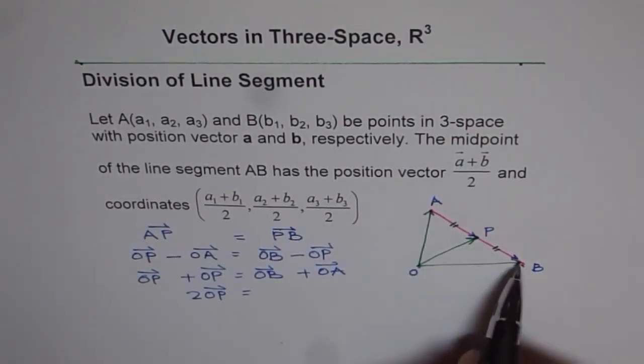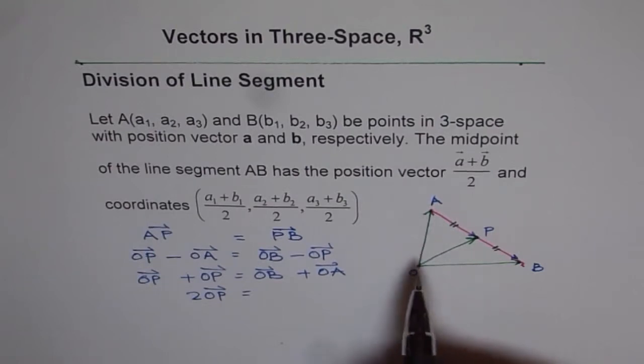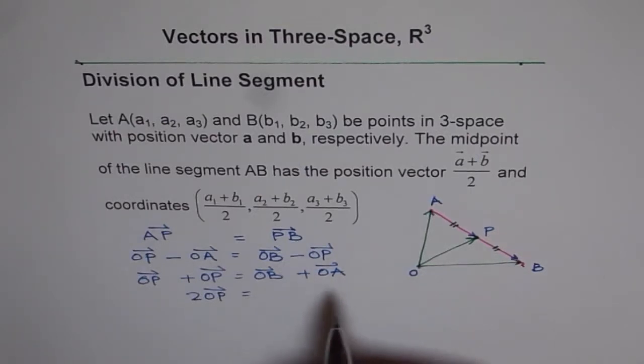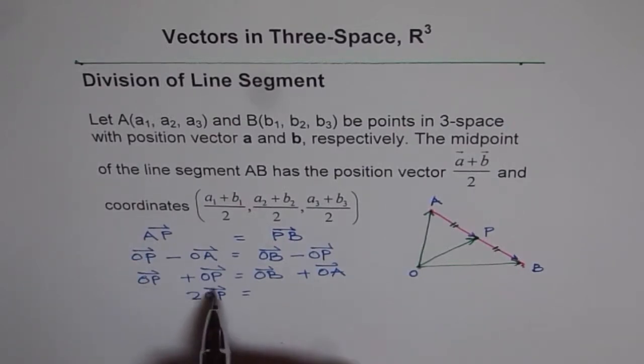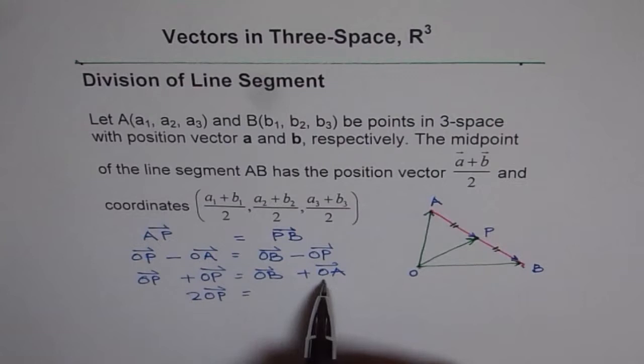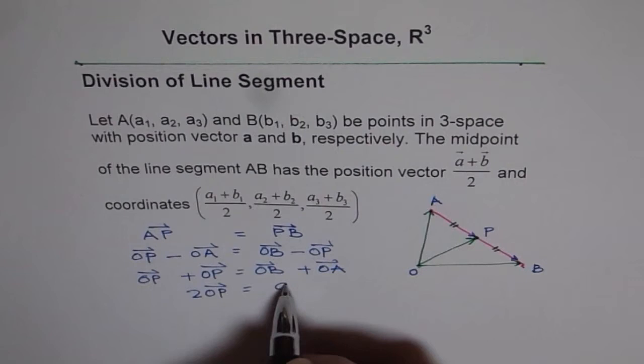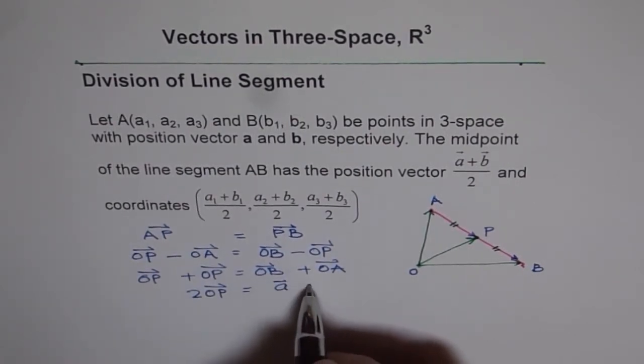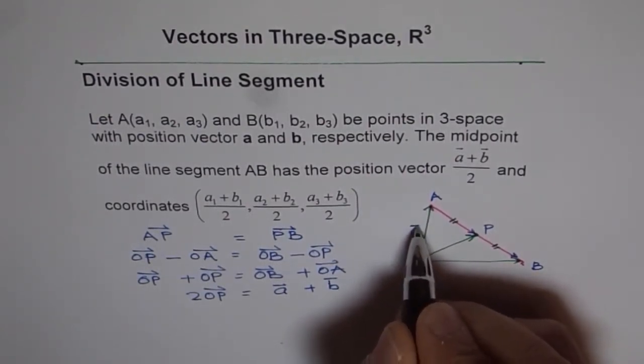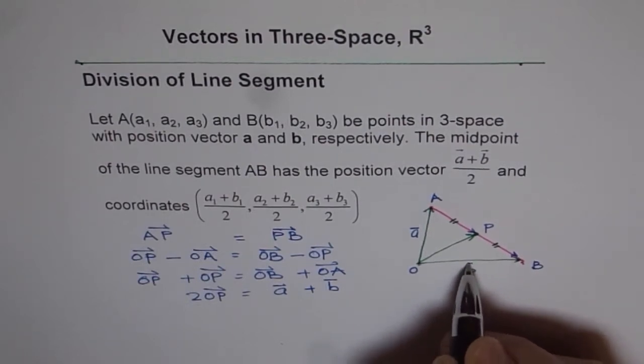And OB plus OA or OA plus OB is AB, right? So OB is the vector B and OA is the vector A, the position vector A. So we will write OA first and we will write this as A, vector A and this is our position vector B. OA is position vector A, this represents position vector A and OP represents position vector B.